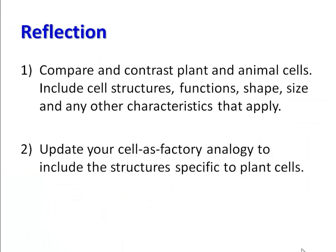Now that you've taken some time to differentiate the plant cell from an animal cell, compare and contrast plant and animal cell structures. Make sure you include any structures, shapes, functions, size, or any other characteristics that might apply — you'll probably have to go back to that initial slide to do this properly. Secondly, update the analogy of a cell as a factory, and make sure you include structures that are specific to plant cells.